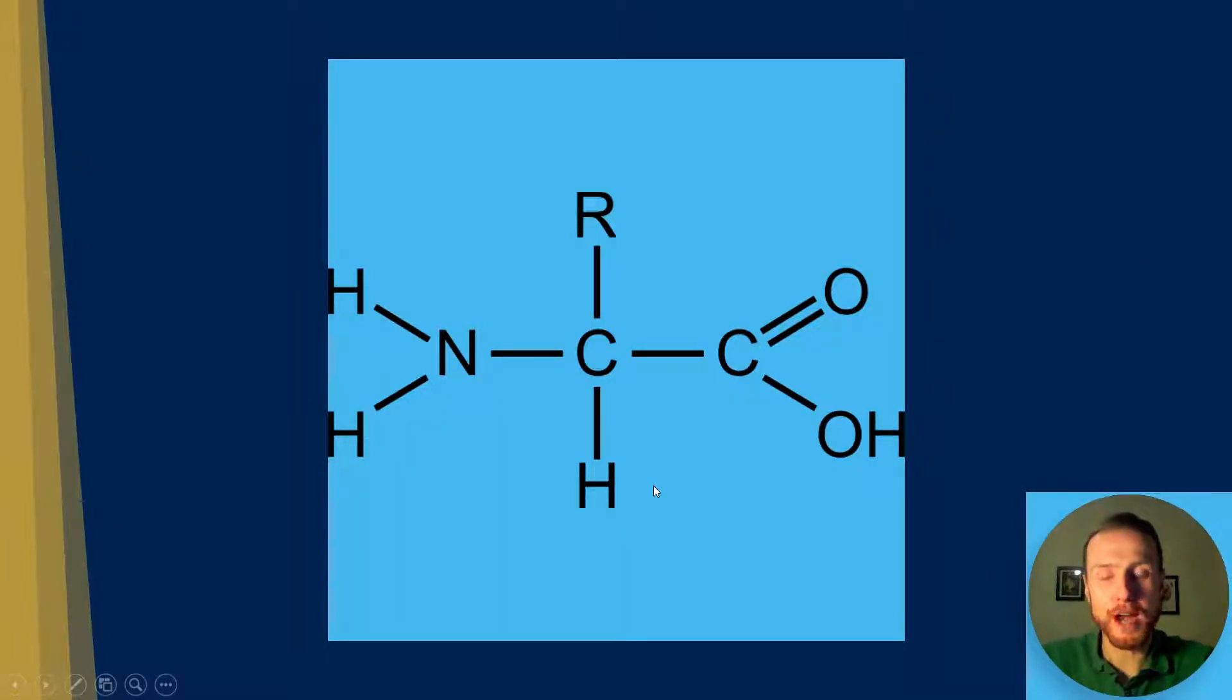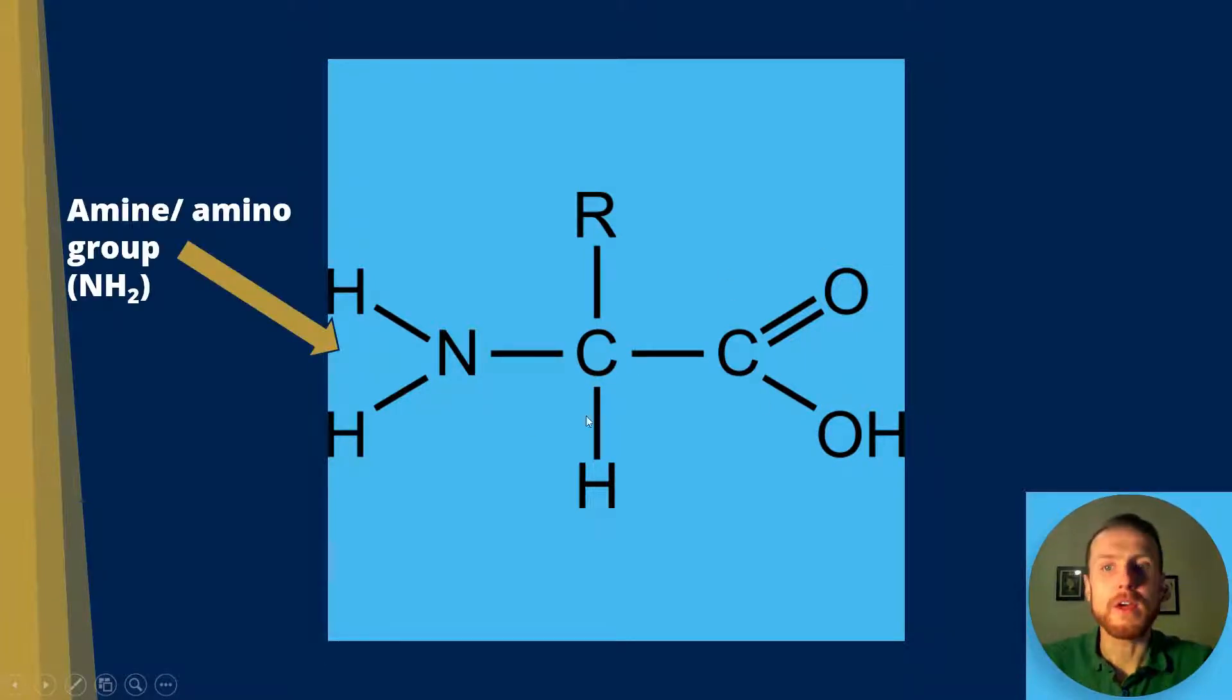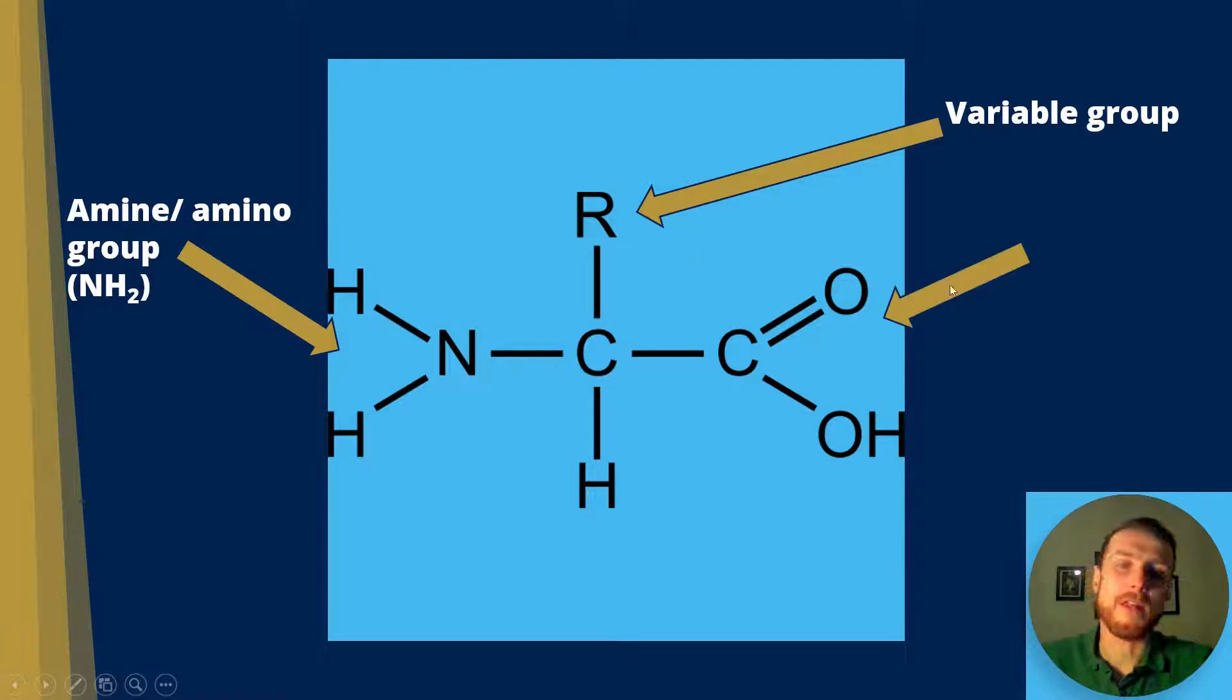This shows the general structure of an amino acid. In the middle we have the carbon, with our amino group on the left and carboxyl group on the right. The amino group is NH2—one nitrogen and two hydrogens. Remember hydrogen can form one bond, nitrogen can form three. Then we've got our variable R group that changes depending on the amino acid. Then the carboxyl group, which is one carbon, a double bonded oxygen, and an OH.